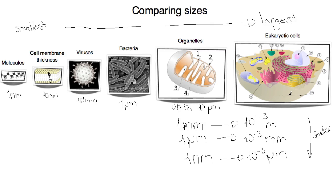And finally, eukaryotic cells can be anything up to 100 micrometers. And so that's the measurements for you.